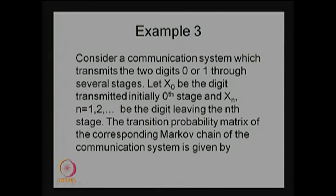Each stage corresponds to one random variable, and the collection of random variables over all stages forms a sequence. This constitutes a stochastic process — specifically a discrete time discrete state stochastic process — because the possible values of xn are 0 or 1, giving a discrete state space {0, 1}.